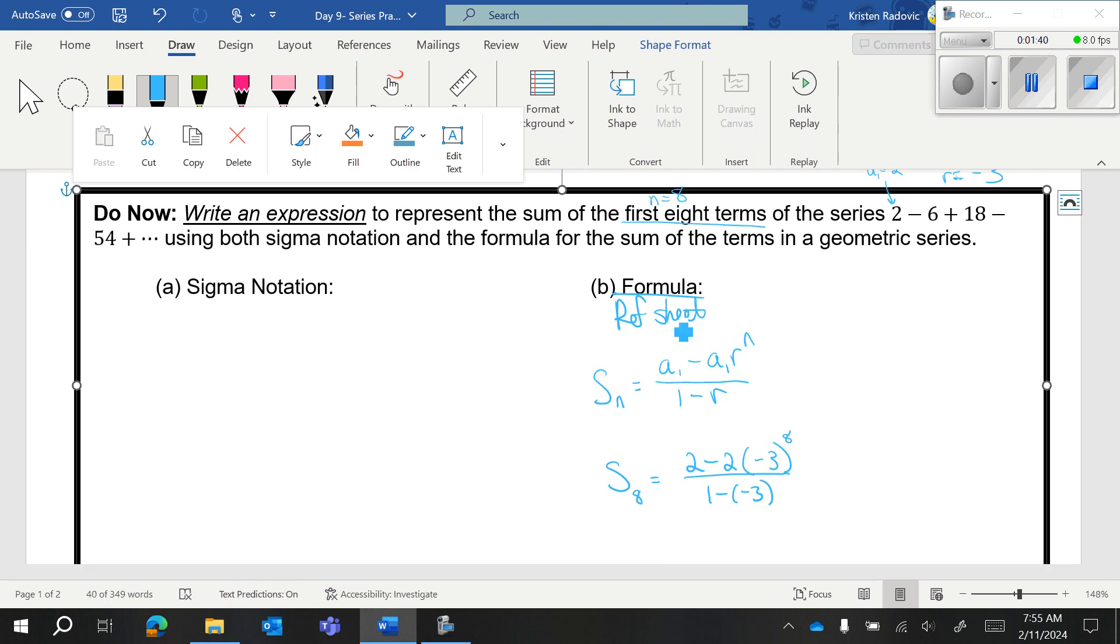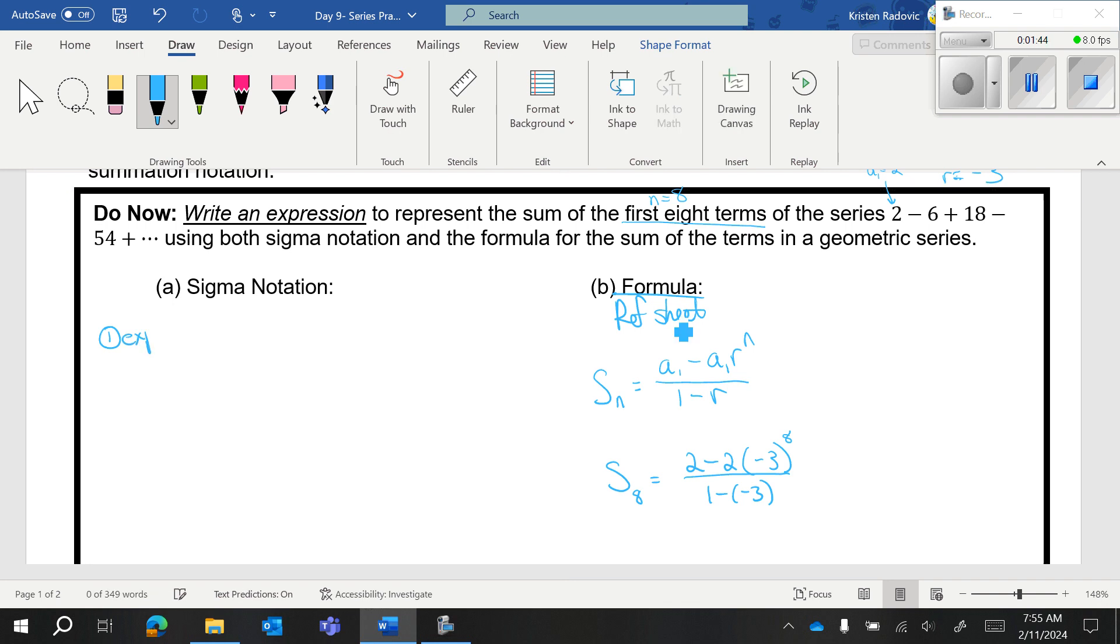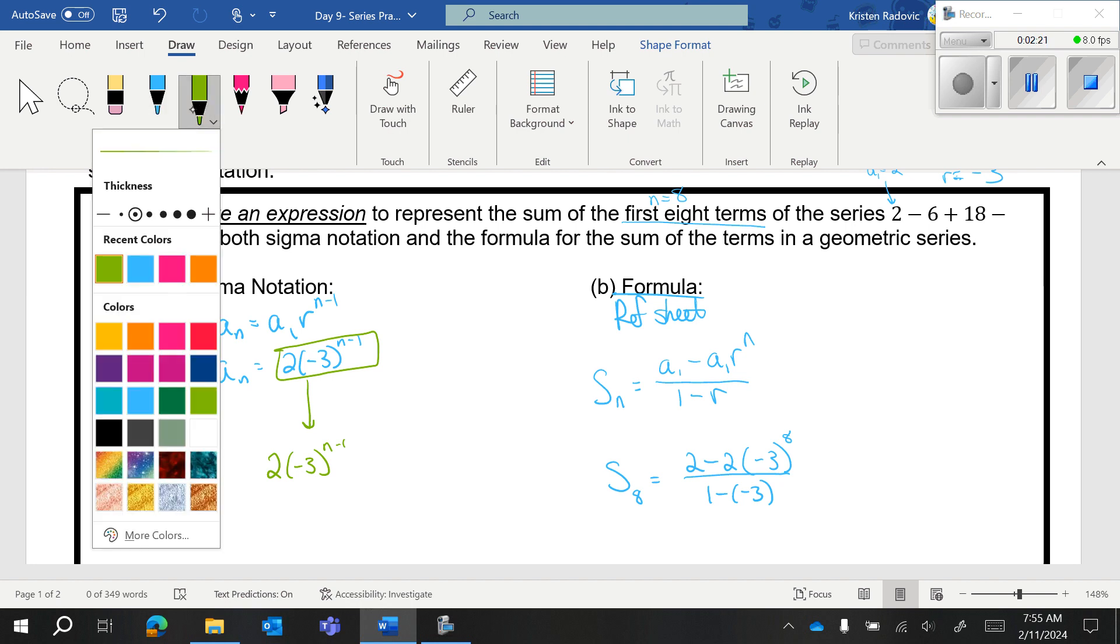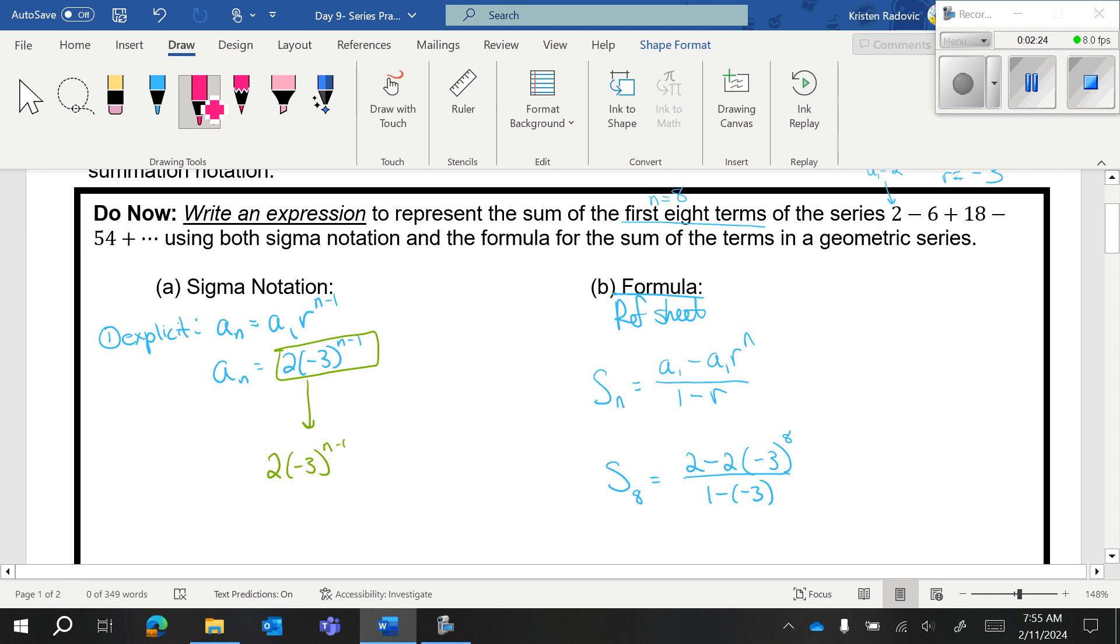Now with sigma notation, the first thing you need is the explicit formula. The explicit formula for geometric sequence is A sub N equals A sub 1 R to the N minus 1. That means we have A sub N equals 2 times negative 3 to the N minus 1.